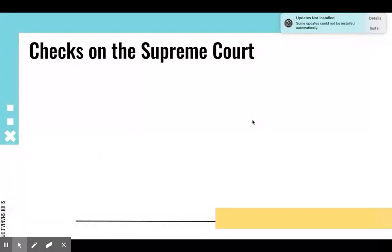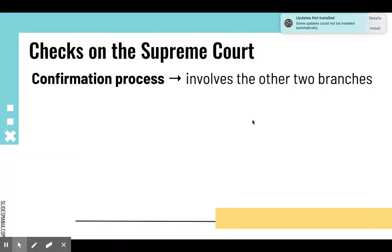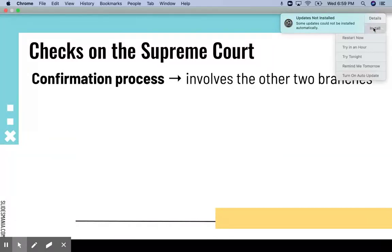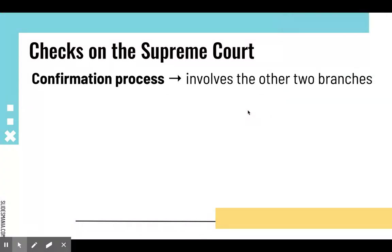Let's start with the confirmation process, which we talked about at the very beginning of this unit. The confirmation process is itself a check on the Supreme Court because it involves the other two branches of government. The Supreme Court doesn't nominate itself — how a person gets to the Supreme Court has to go through both the president and the Senate of the legislative branch.